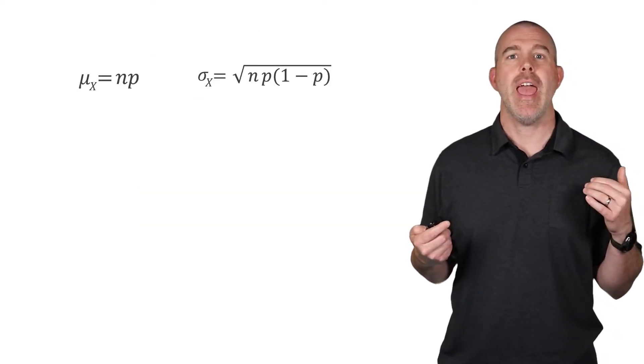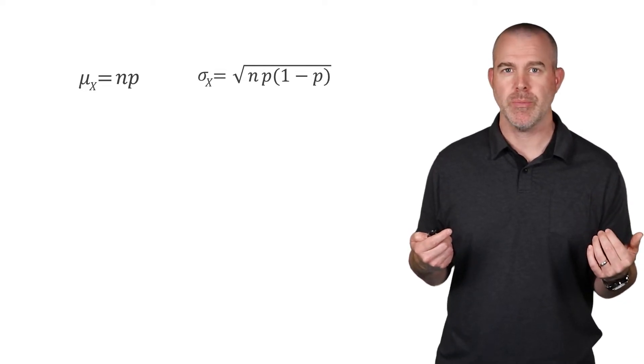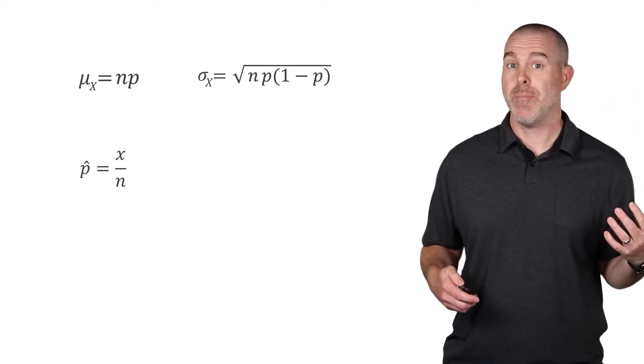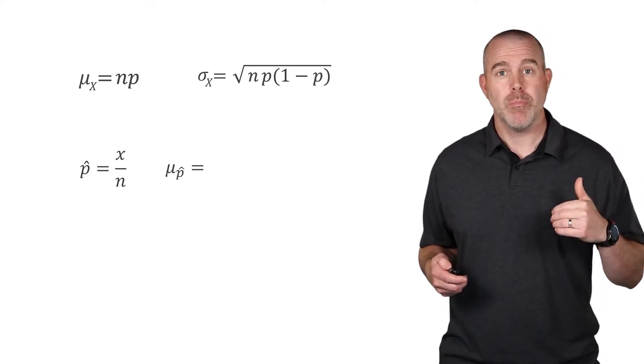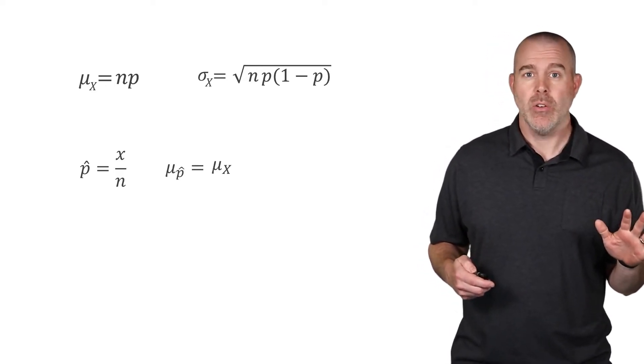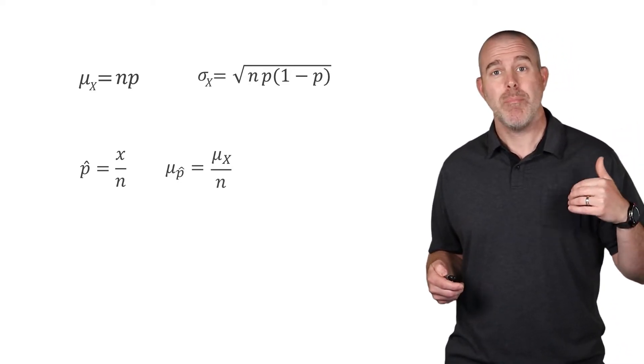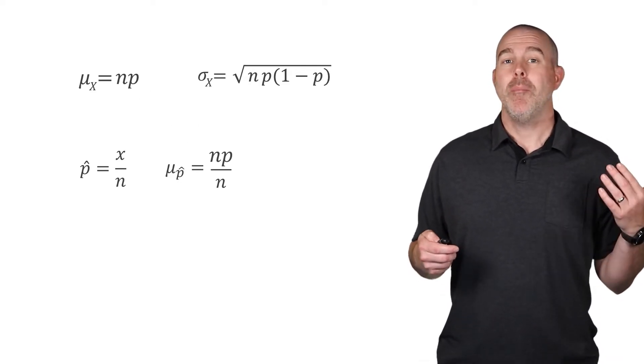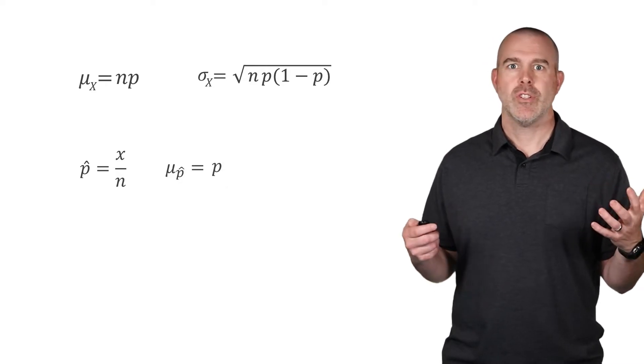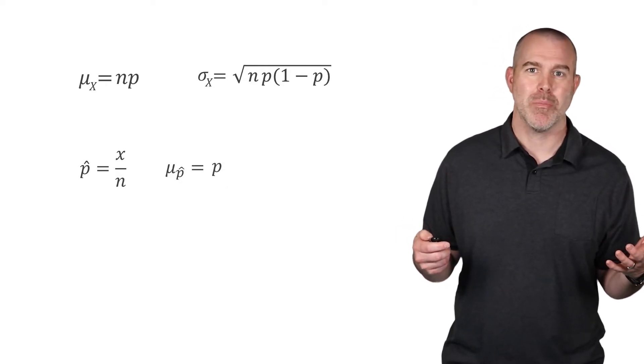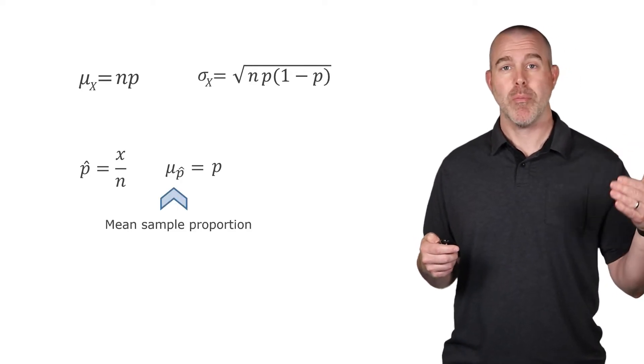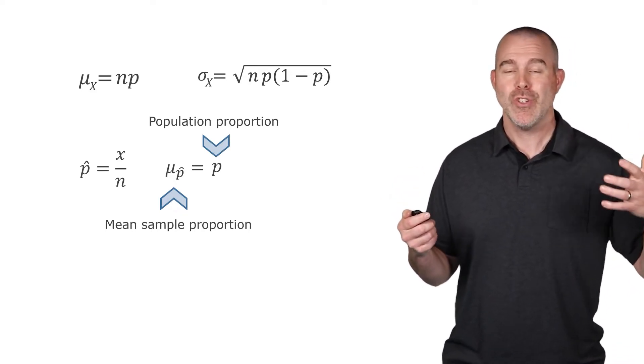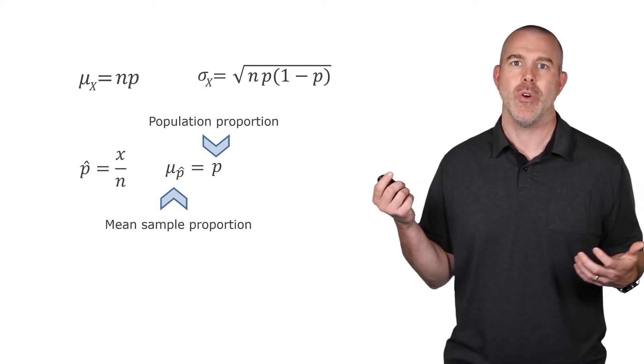You go back to our mean and standard deviation for the binomial distribution. Now remember, we are looking at a sample proportion, x over n, the count over the total sample size. So for our mean, we want the mean of those sample proportions. It's not going to be the mean count, but it'll be the mean count over the sample size, μ sub x over n. Well, we know that μ sub x, that's n times p. So the mean of the sample proportions should be the same as the population proportion. If you take a bunch of different samples, the mean sample proportion from all of your samples should be the same as the population proportion. That makes sense. On average, the sample proportion should be the same as your overall proportion.